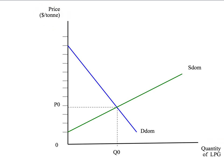And we're going to assume initially that there is no international trade in LPG. We're going to start in a situation of autarky where there's no international trade. In that situation the domestic equilibrium is simply going to occur where the domestic demand curve intersects the domestic supply curve, and that's going to be at a quantity of Q0 and the price of P0.